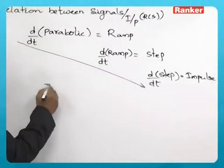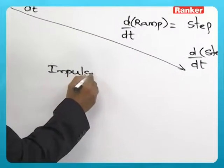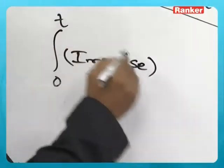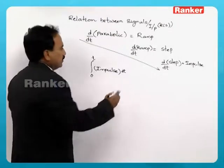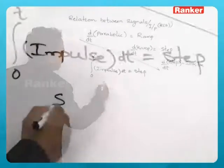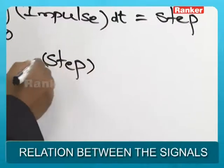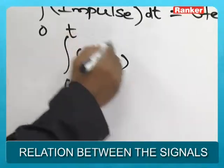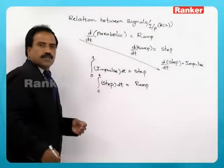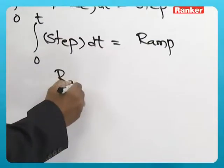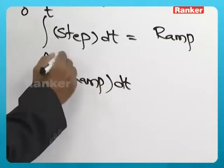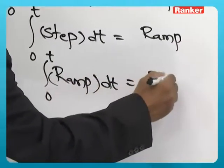If you know the impulse response, then integrate it — ∫₀ᵗ (impulse response) dt — and you get the step response. If you know the step response, then ∫₀ᵗ dt gives you the ramp response. And if you know the ramp response, integrate it to get the parabolic response.